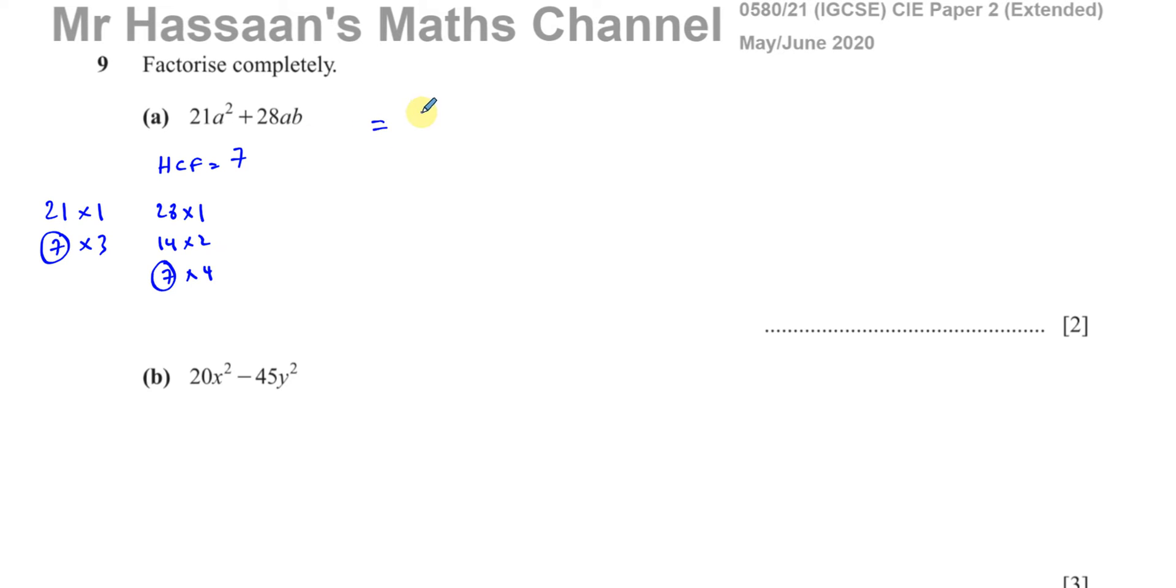So I'm going to write 7 outside the bracket. And then if we look at the letters, you have a², which is like a times a, and in this one you have a times b. What's common? Well, just one of those a's is common.